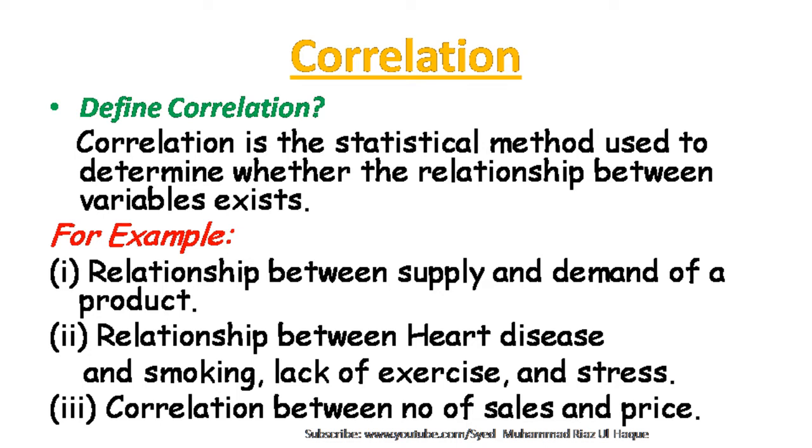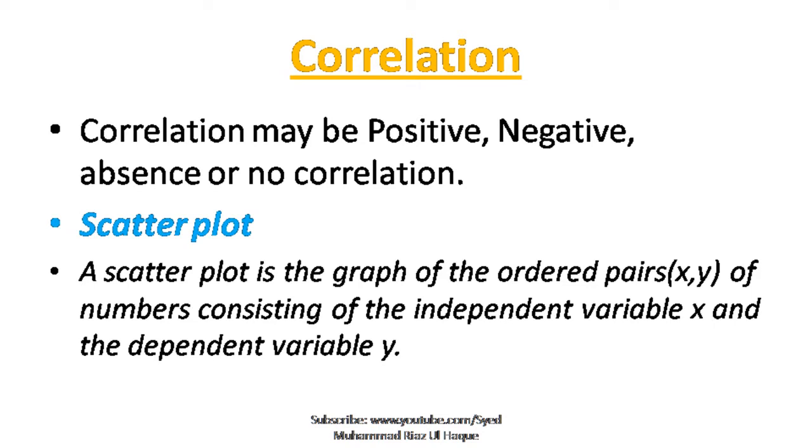Correlation defines the relationship between two variables — it tells us whether the relationship is positive, negative, or there is no correlation. A positive relationship means there is a positive effect of the independent variable on the dependent variable. A negative correlation means there is a negative effect. We can further define these by means of a scatter plot — a graph of ordered pairs of x and y values.